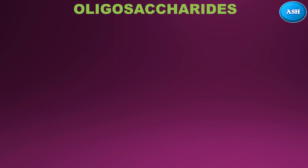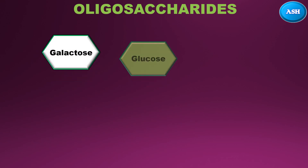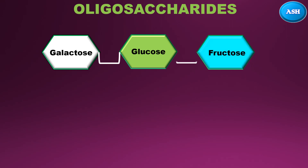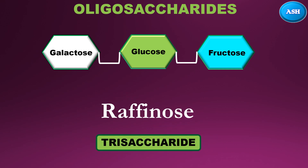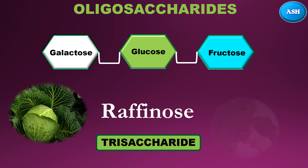The next type is oligosaccharides, covering three to six units of saccharides. The first one has three units — one galactose, one glucose, and one fructose — which are linked together by glycosidic bonds to form raffinose. As raffinose contains three units it is also known as a trisaccharide. Raffinose is found in vegetables like cabbage and broccoli.